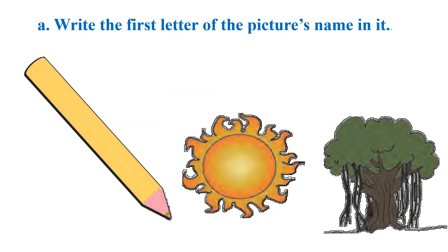This is our activity. In this activity you have to write the first letter of the picture's name. So let's start. Our first picture is pencil — P, pencil. Which letter has sound P? Correct, letter P has sound P. That's why I have written here letter P. So you have to use all the phonic sounds while completing this activity.